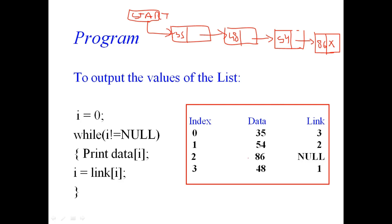Looking at the logical structure example: the first node has value 35, connecting to the next node at the third index which is 48, then the next node is 54, and the last node is 86. The link part of 86 is set as null.